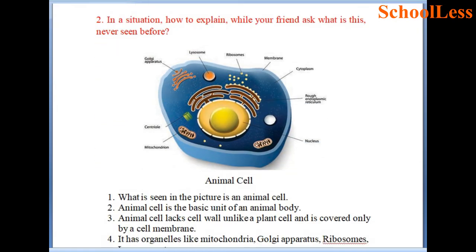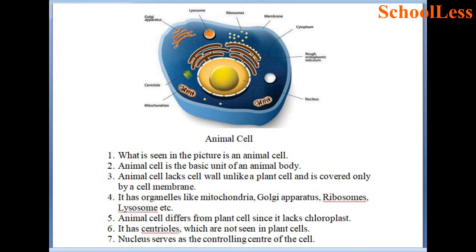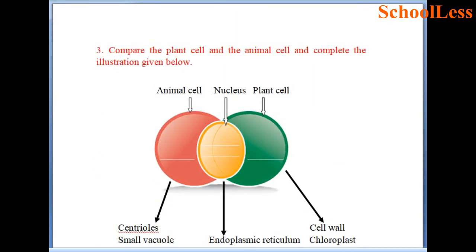Question 2: How to explain an animal cell to a friend who has never seen one. What is seen in the picture is an animal cell — the basic unit of an animal body. An animal cell lacks cell wall; what you see is a cell membrane. It has organelles like mitochondria, Golgi apparatus, ribosomes, lysosomes etc., all properly labeled. Animal cell differs from plant cell since it lacks chloroplast but has centrioles which are not seen in plant cells. Nucleus serves as the controlling center of the cell.